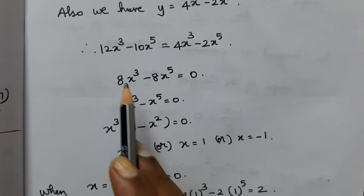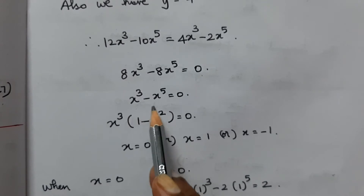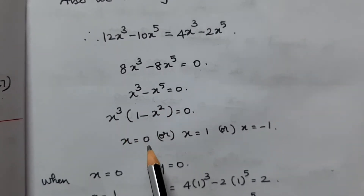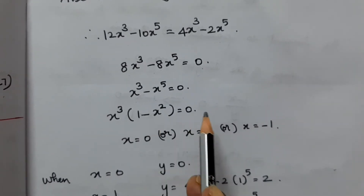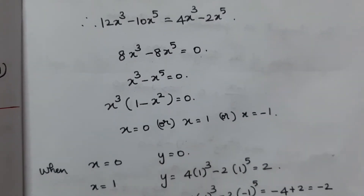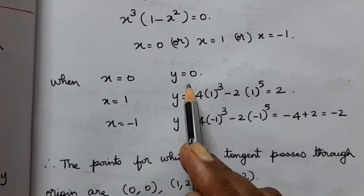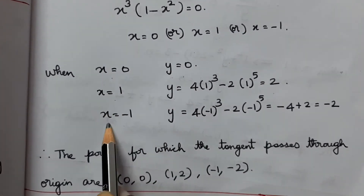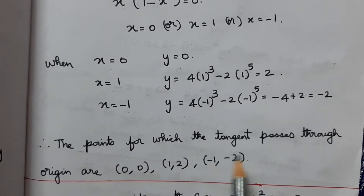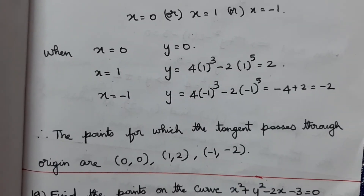Factoring: 8x³(1 - x²) = 0, so x = 0 or x = ±1. Substituting back: when x = 0, y = 0; when x = 1, y = 2; when x = -1, y = -2. Therefore the points through which the tangent passes through the origin are (0, 0), (1, 2), and (-1, -2).